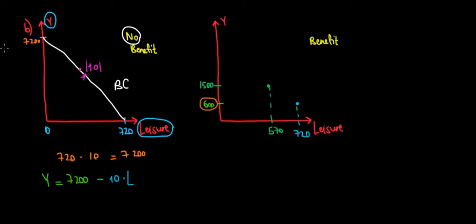Let's connect this kink point with a different color. From 720 hours of leisure down to 570 hours, the slope of the budget constraint is 6, not 10. This is because the benefit is reduced by 40%, so from the 10 euros earned per hour, we only keep 6 euros net in our pocket. The slope in this range is therefore 6.